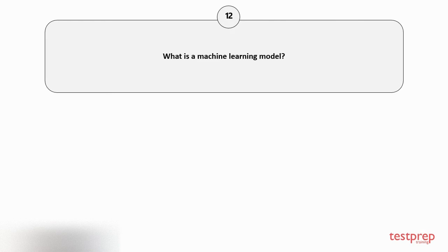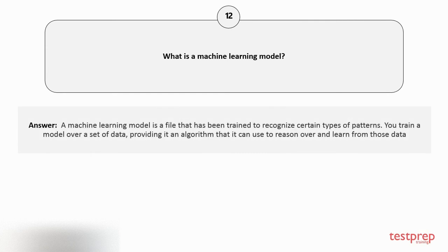Question number twelve: What is a machine learning model? A machine learning model is a file that has been trained to recognize certain types of patterns. You train a model over a set of data, providing it an algorithm that it can use to reason over and learn from those data.